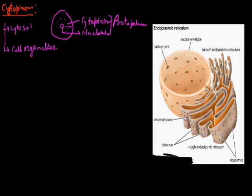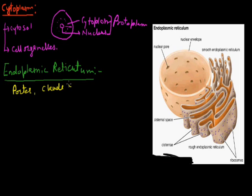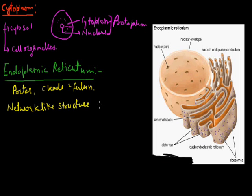So first of all, we discuss about the first cell organelle — endoplasmic reticulum. Endoplasmic reticulum is present in plant cell as well as in animal cell; it is absent in the bacterial cell. The endoplasmic reticulum was first time reported by Porter, Claude and Fuller. These scientists reported this network-like structure in the cell.